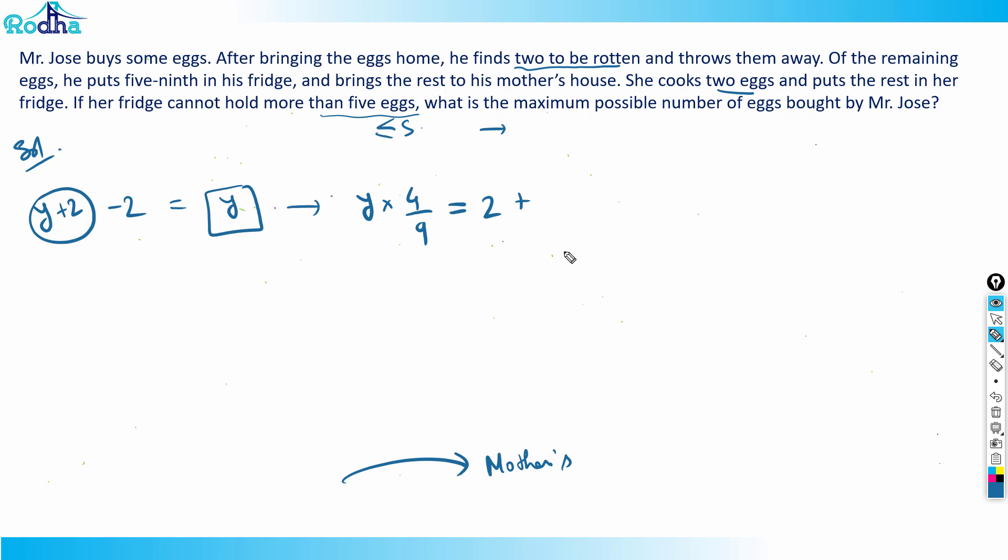That means the other number is less than or equal to five, because maximum five eggs the fridge can hold. If I take maximum five, then y times four-ninths is equal to—this number will always be less than or equal to seven (two plus five). That means less than or equal to seven.